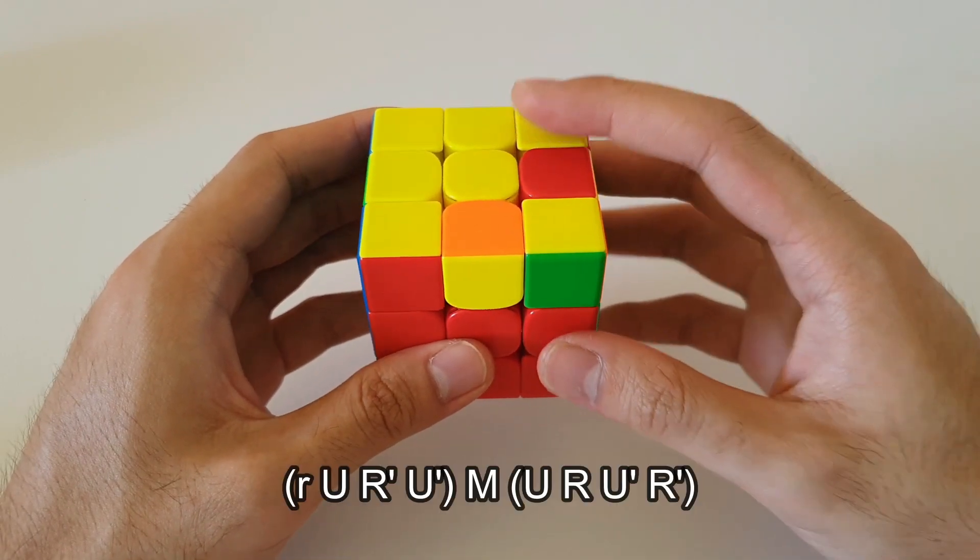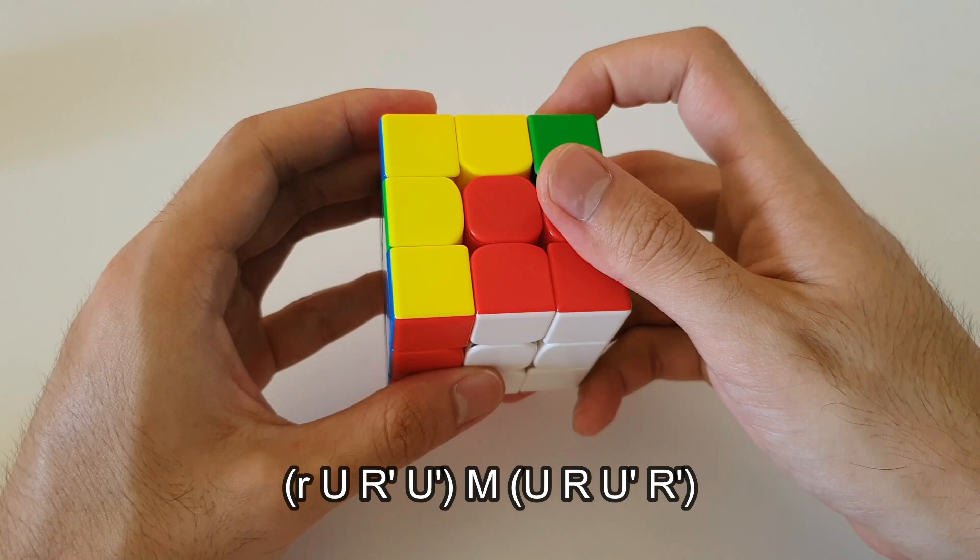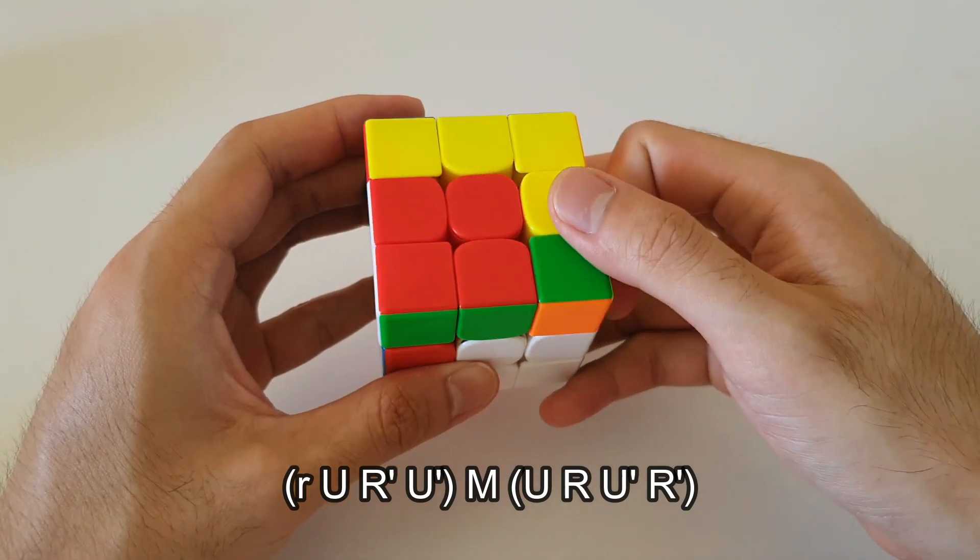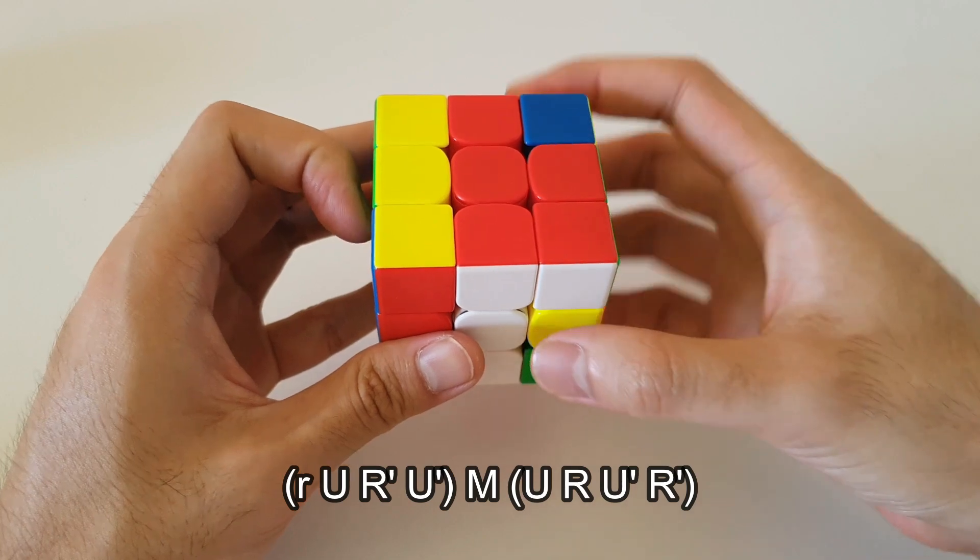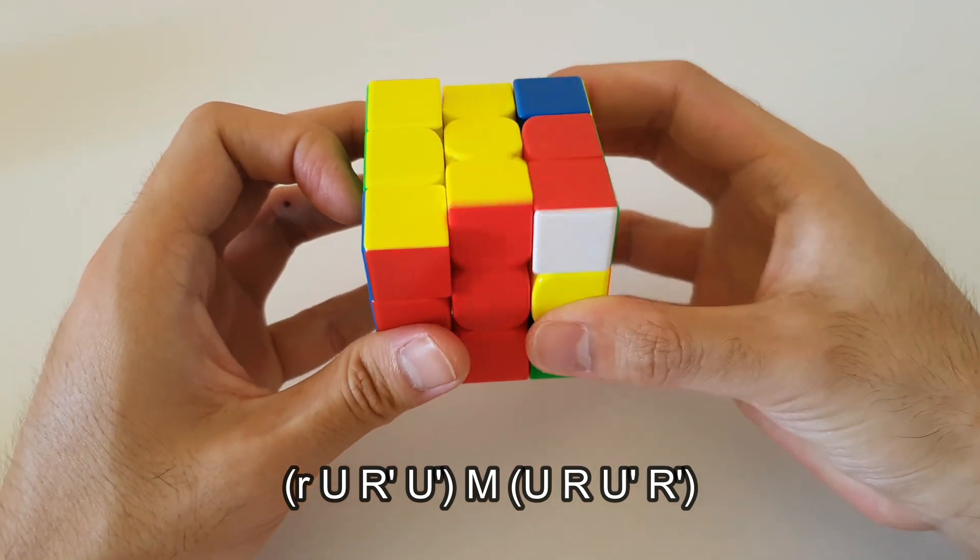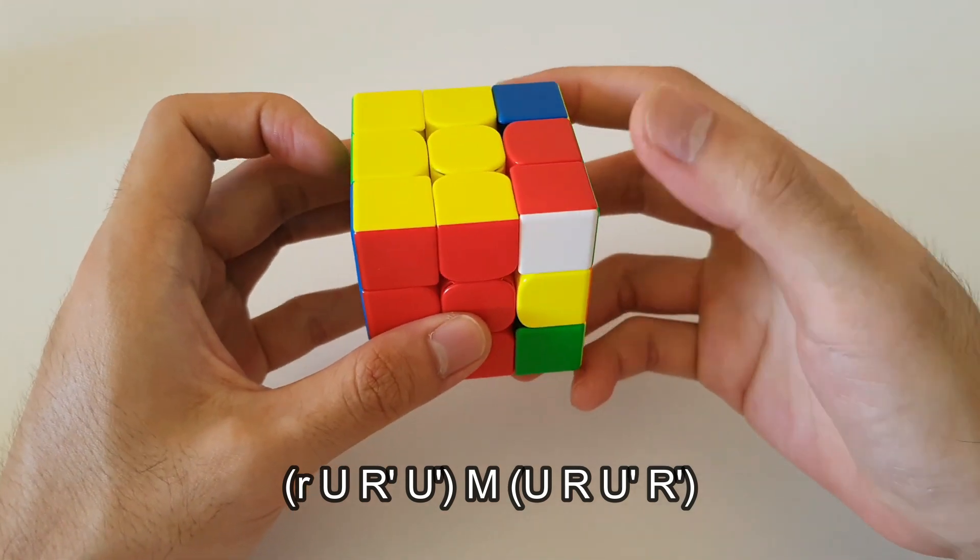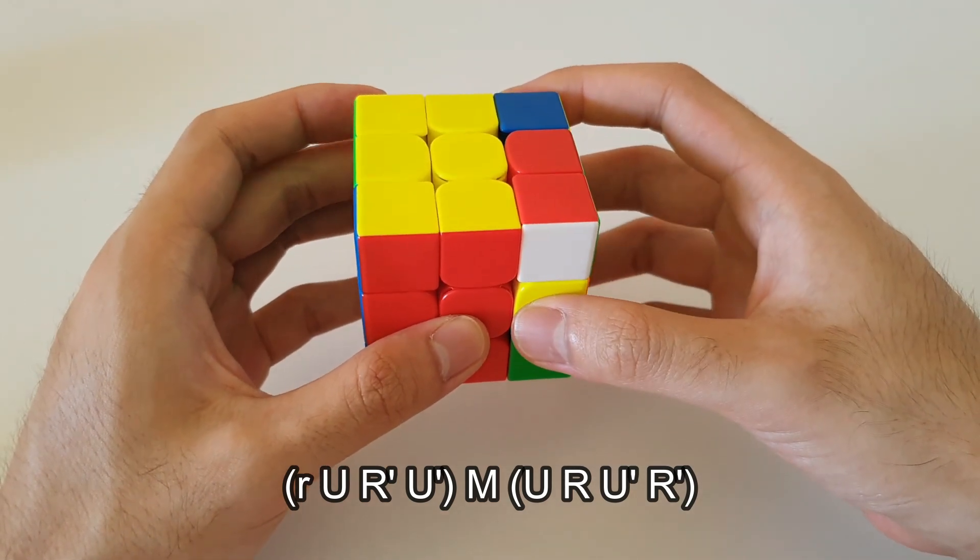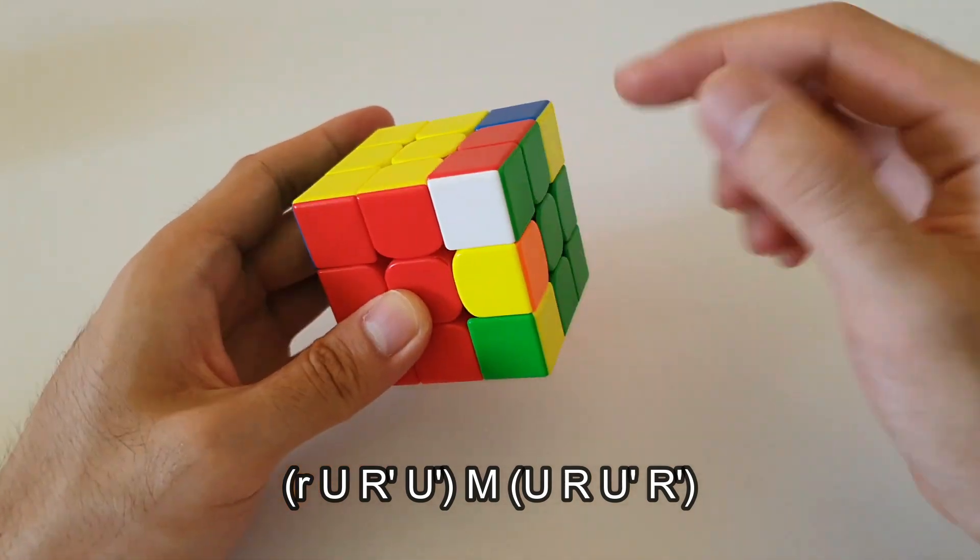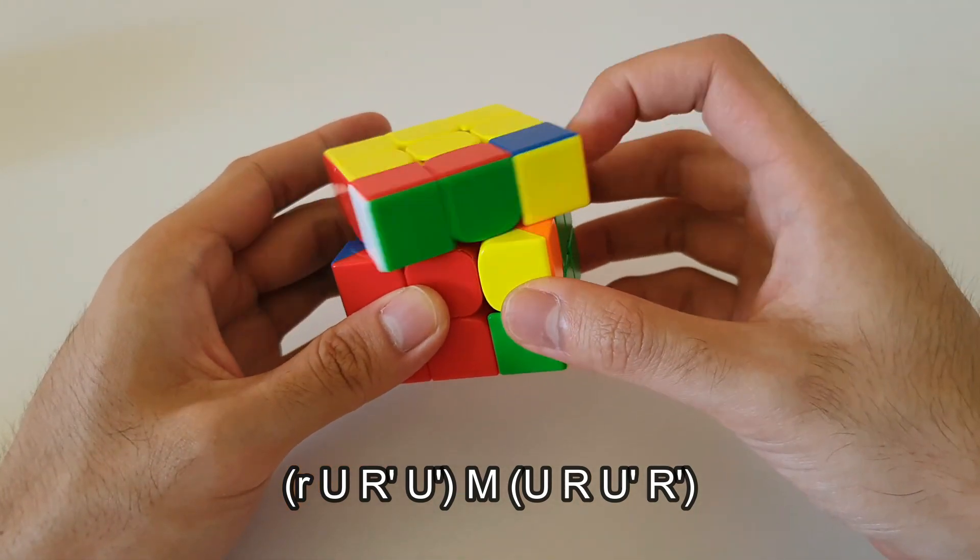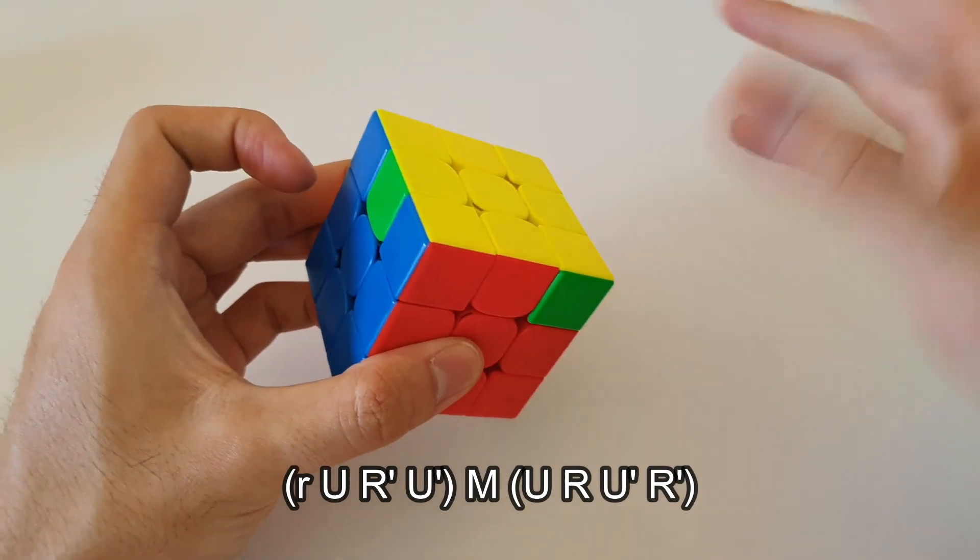It starts with a wide sexy, so it means the first move is a wide R move. The rest is a regular sexy, so U, R', U'. You want to do an M move, which is the middle layer down. Otherwise, you can think of it as a wide R' followed by an R. That might be easier for the finger tricks. And finally, you just want to insert this pair regularly, as if it was a regular F2L pair. So just like this. And that solves that OLL case.